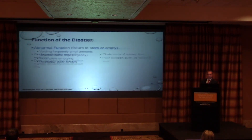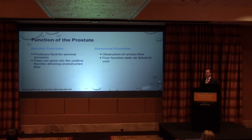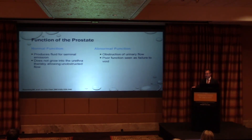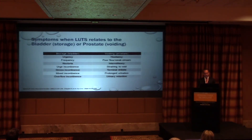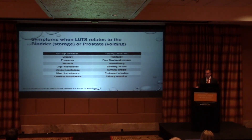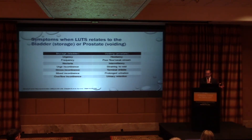Abnormal bladder function is when it holds less than 300 to 500 mLs with an uncontrollable urge. The bladder is all about volume. As for the prostate, it has two functions: fluid for seminal emission, and to stay out of the way — which it does a really bad job at. Bladder symptoms: urgency, frequency, nocturia of small volumes. Prostate symptoms: poor flow, hesitancy, straining. Bladder is storage and volume; the prostate is about flow.